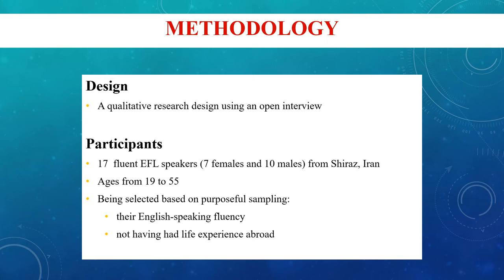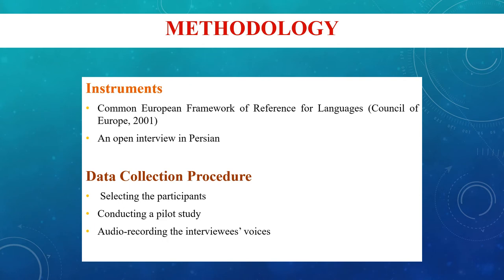This was a qualitative study. To conduct this piece of research using purposeful sampling, we were able to recruit 17 very fluent Iranian EFL speakers whose age ranged between 19 and 55. The criteria and deciding factors for selecting these participants were their advanced level of oral fluency and not having lived in an English-speaking country. Participant level of oral fluency was determined using the Common European Framework of Reference for Languages, especially by the aid of a speaking scale rubric.